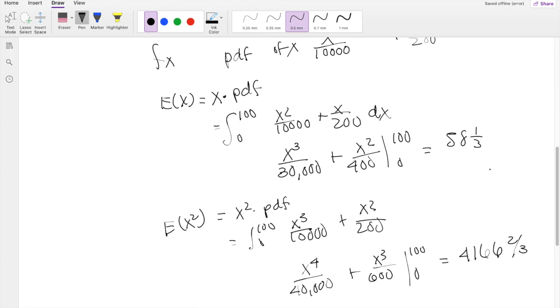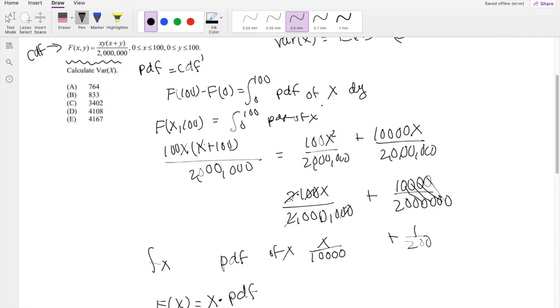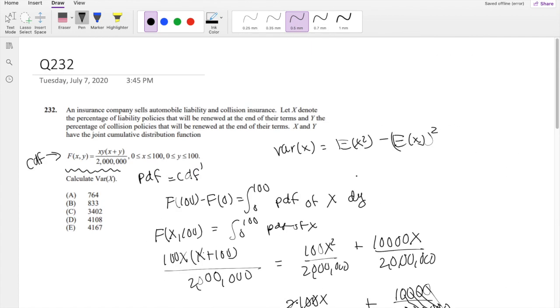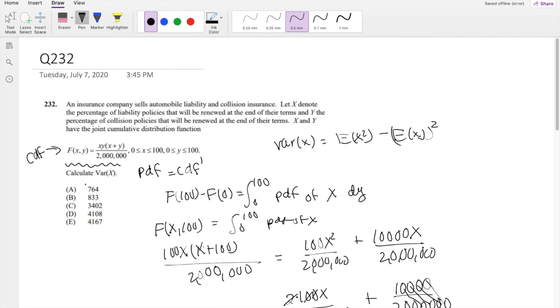All right, so let's just plug it into our formula. We're finding variance. So then that's going to be equal to E(X squared) minus expectation squared. Let me type that into my calculator real quick. This is equal to 763.88 repeating, which is approximately equal to 764, which is our answer A.